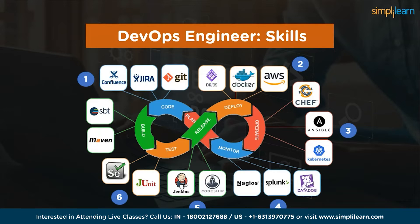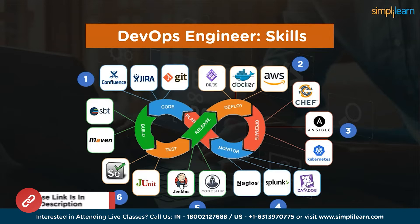Finally, having good knowledge of testing tools like Selenium and JUnit is necessary for a DevOps engineer. JUnit is primarily focused on unit testing and automated testing of Java code, while Selenium is geared towards functional testing and automation of web applications. Both tools play critical roles in DevOps workflows, contributing to faster feedback cycles, improved code quality and reliable software releases.